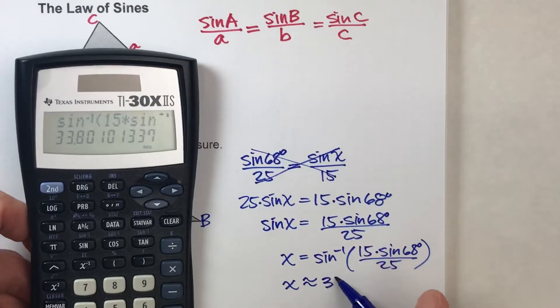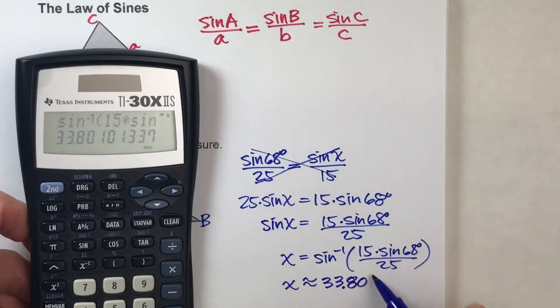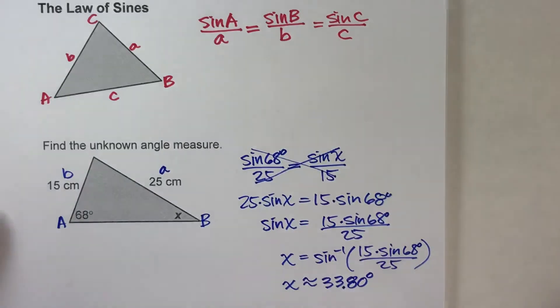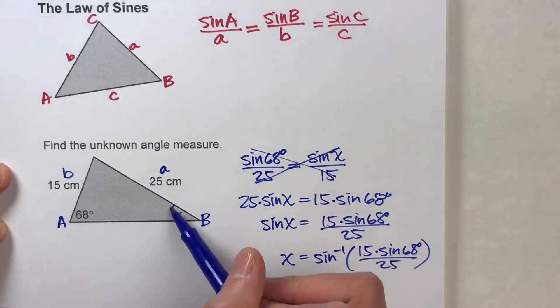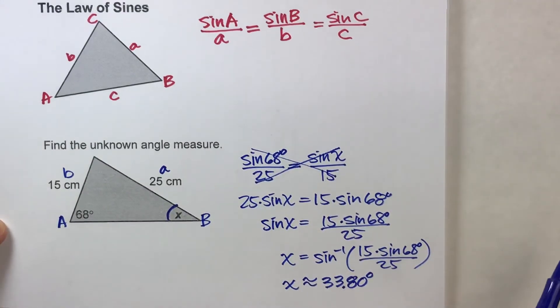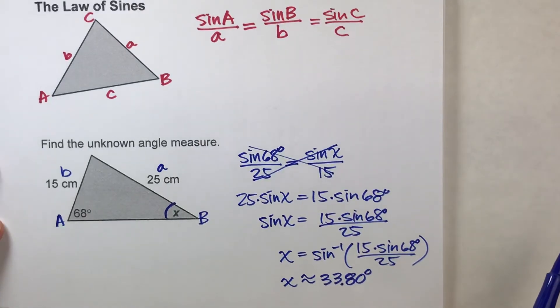So, we'll go to the hundredths. 33.80 degrees. Okay. So, that right there is our missing angle. About 33.80 degrees.